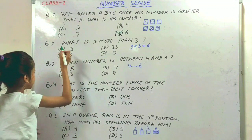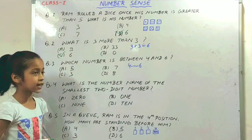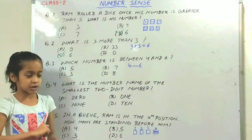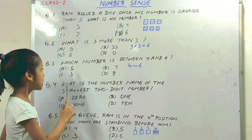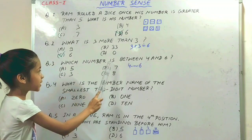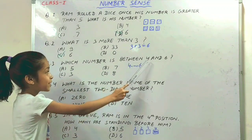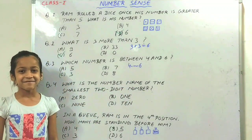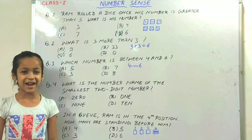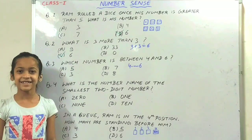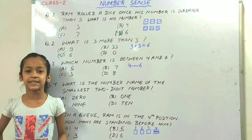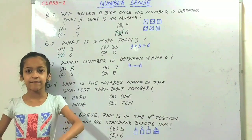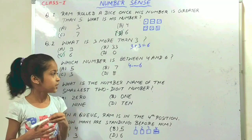Option C is the correct option. The next question is: which number is between 4 and 6? Between 4 and 6, 5 comes.